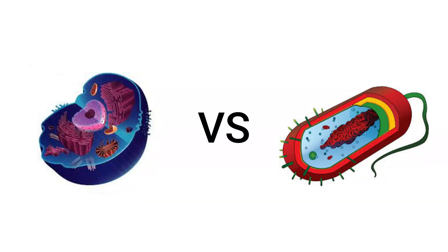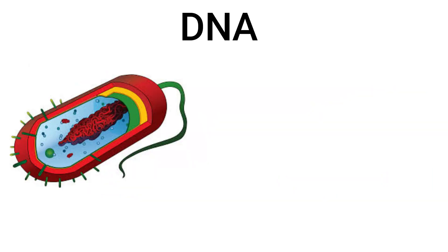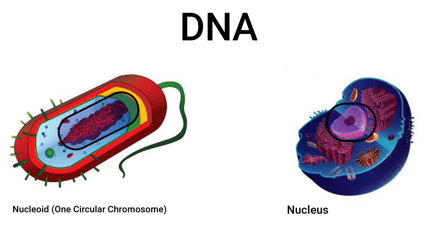Let's get into what makes them different. One of the main things is how they store their DNA. Prokaryotic cells have one circular chromosome that is located in the nucleoid. Unlike eukaryotes that have a nucleus, the nucleoid region is not membrane-bound.